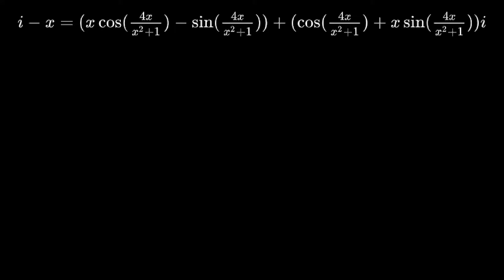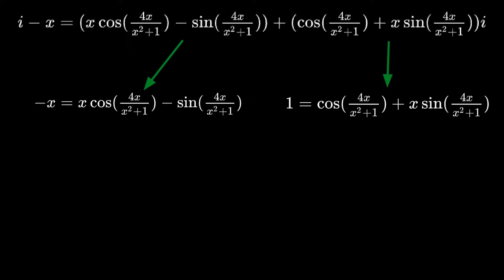Since x is a real number, we can treat the real and imaginary parts as two separate equations. Negative x equals x cosine of 4x over x squared plus 1 minus sine of 4x over x squared plus 1, and 1 equals cosine 4x over x squared plus 1 plus x sine 4x over x squared plus 1.